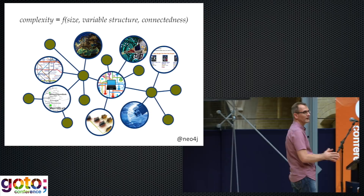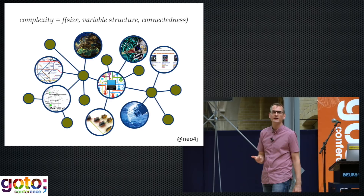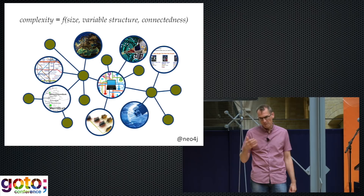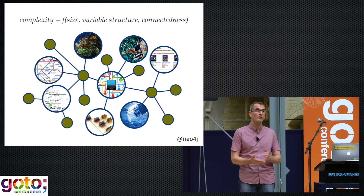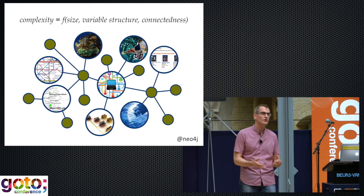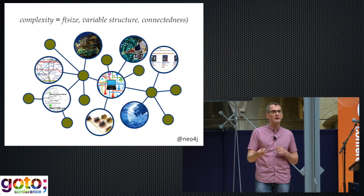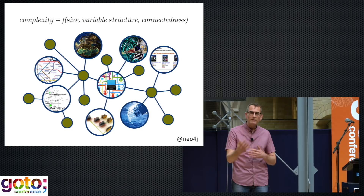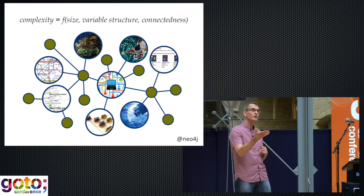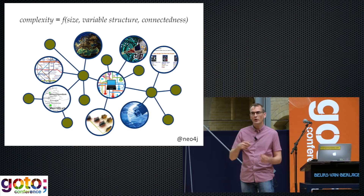Then there are two other forces: variable structure and connectedness. Variable structure is that kind of messy, real-world data that doesn't always fit into a one-size-fits-all relational schema. Variable structure is actually a function partly of increased data size — the more we learn about the things in our domain, the more each of those things begins to look subtly different from every other. At a very high level, all our customers look the same — they've got a first name and a last name. But the more we find out about them, the more each customer begins to look subtly different, with lots of different attributes, some shared, some unique.